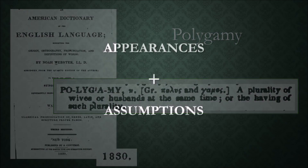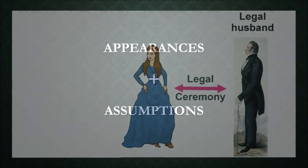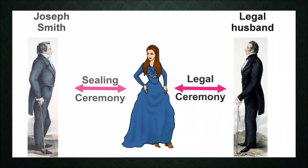The primary evidence presented in the CES Letter to support the claim that Joseph Smith practiced polyandry is primarily appearances and assumptions. Because the women were legally married at the time of their sealing to Joseph Smith, it appears that the woman had two husbands. But in actuality, did the sealing ceremony create a second husband?